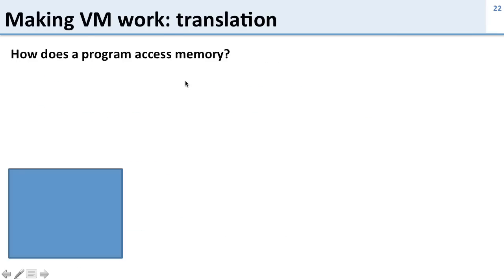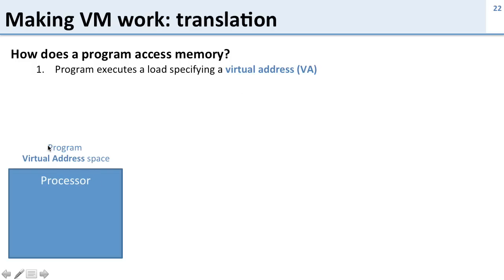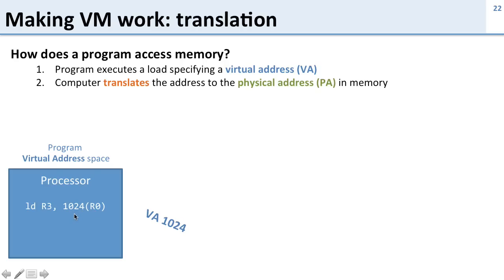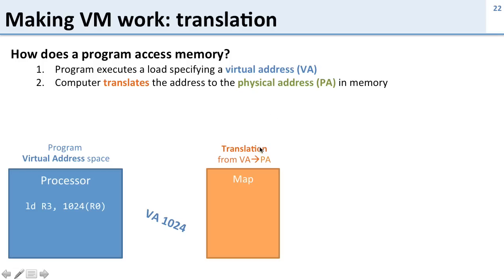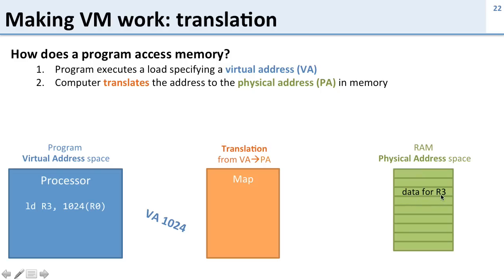So how do we make this work? How does a program access memory? The program executes a load, and the load specifies a virtual address — that's the way programs work. Here's our processor running the program's virtual address space, and here's our load: load R3, 1024, R0. The virtual address is going to be 1024. The computer is going to translate this virtual address to the physical address in memory. We have a map from virtual address to physical address that tells us how to get the data.